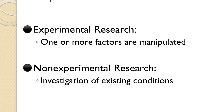We can divide empirical research into two categories. First is experimental research, where one or more factors are manipulated. For example, if I want to give treatment to preschoolers who stutter, I divide a group of eight kids and give them one type of therapy, then take a second group and give them a different therapy. I'm manipulating the type of therapy they receive and then seeing who does better at the end.